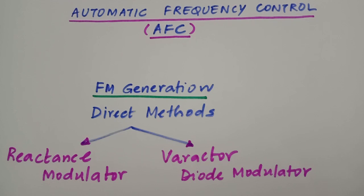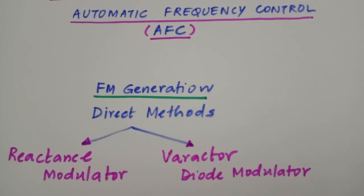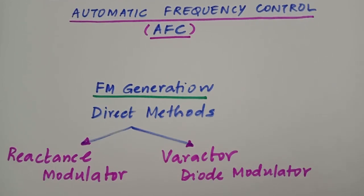If we look into the varactor diode modulator, we know that it is more stable compared to the reactance modulator, because the varactor diode modulator uses the crystal oscillator as its master oscillator. So the FM output is more stable. But the disadvantage is that since we use a crystal oscillator, the frequency deviation is very limited. In many cases we need to use the reactance modulator, but its instability is a concern, so we use an automatic frequency control circuit along with it.